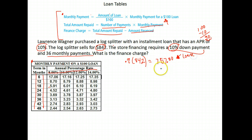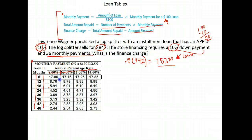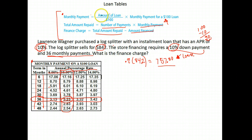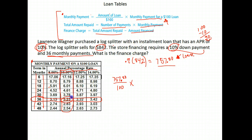They require an interest rate of 10% and 36 monthly payments. So we go over to the table — find the column that has 10%, right here, then find 36 months and go across. Where those two intersect, we get 3.23. So in our formula for monthly payment, we take the amount of the loan — seven hundred and fifty-seven dollars and eighty cents — divide it by a hundred, and then multiply by the monthly payment for a hundred-dollar loan, which is 3.23.